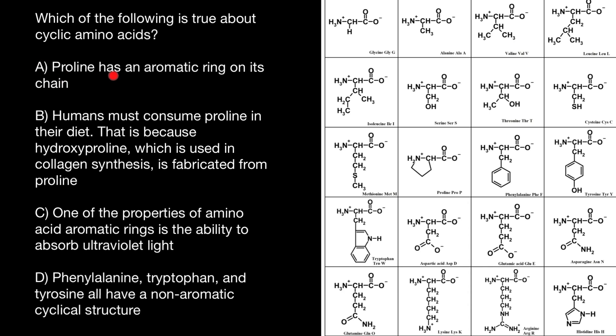And the first variant, A, proline has an aromatic ring in its chain. Just by looking at this table, you probably guessed that we have one, two, three, four, and five amino acids which we call cyclic amino acids